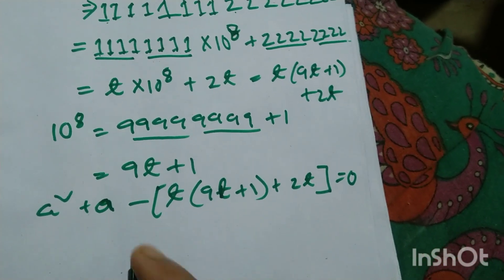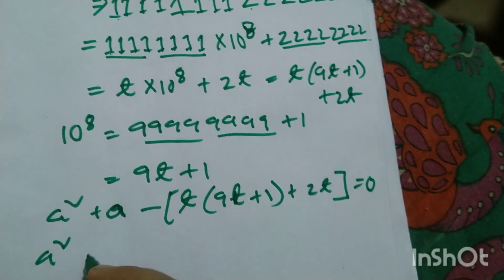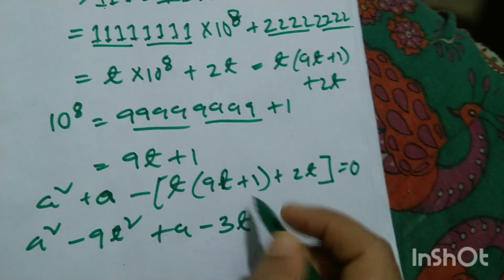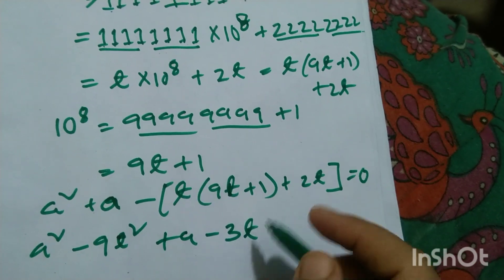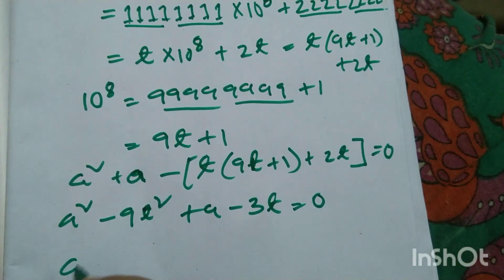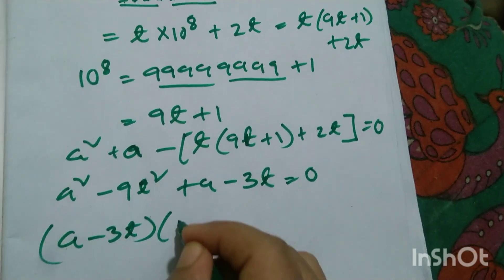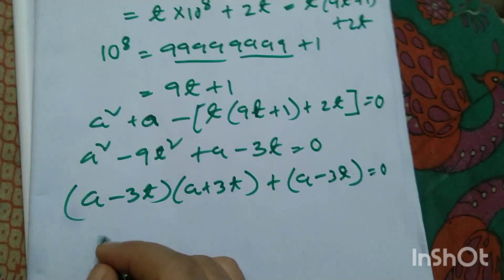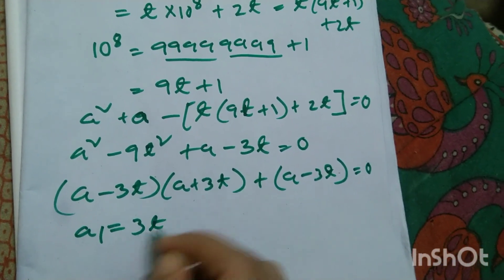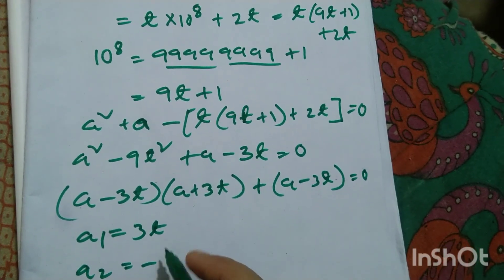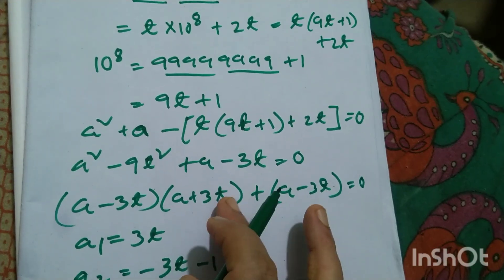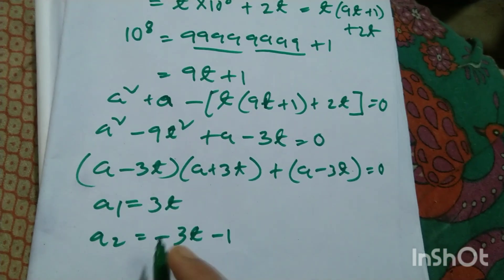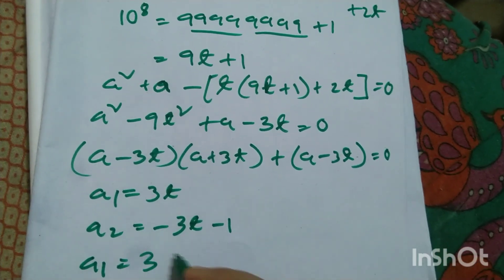Now it can be written as a squared minus 9t squared plus a minus 3t equals zero, because t plus 2t converts into 3t. So we factor as (a minus 3t)(a plus 3t plus 1) equals zero, giving a₁ equals 3t and a₂ equals minus 3t minus 1.